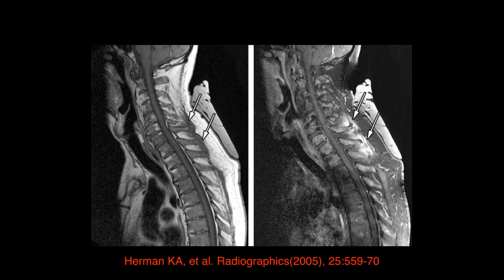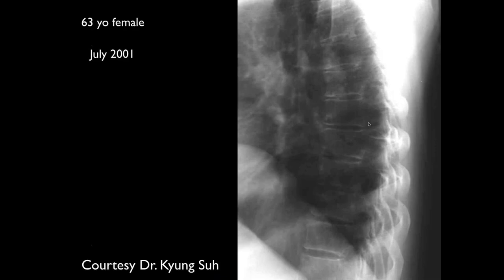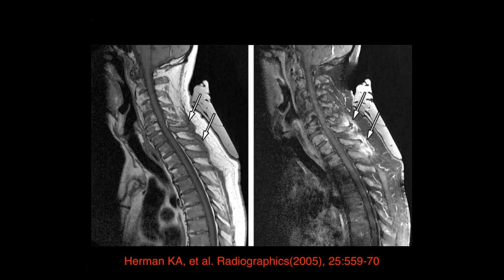Another case with edema in the posterior elements — again in the same category of diseases. This is enthesitis in a patient with systemic inflammatory disease. The T1 changes in the vertebral bodies are strange — you should see more fat. What's happening here is this is hematopoietic marrow, and these are areas where inflammatory disease has healed, leaving fatty marrow replacement.